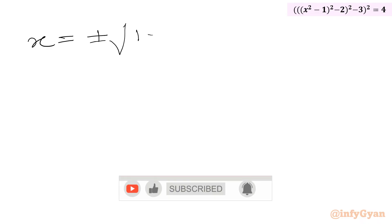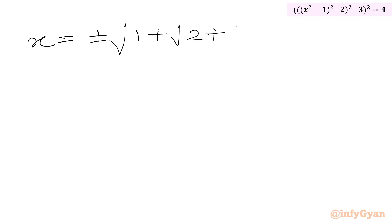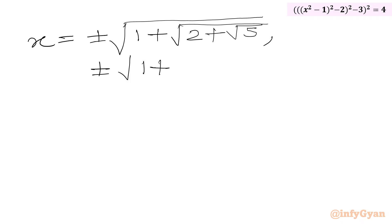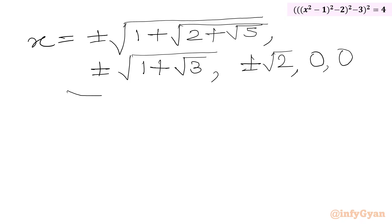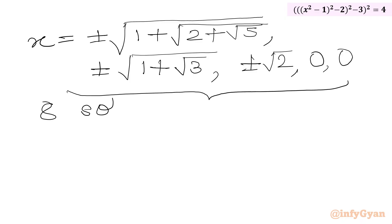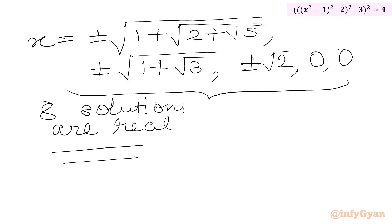Let me write all the solutions: x = ±√(1 + √(2 + √5)), ±√(1 + √3), ±√2, and 0, 0. So overall 8 solutions are real. I hope friends you will like this video. Thank you so very much for watching. Do not forget to like, share and subscribe. Bye bye till next video. Good luck. Take care.